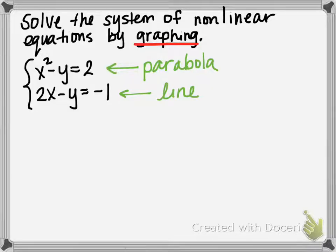Now before we actually graph these two curves, let's just think about how many intersections we may have. So you could have a parabola that opens up and a line that intersects it twice. Therefore, we would have two solutions.